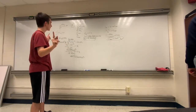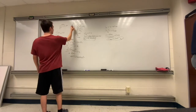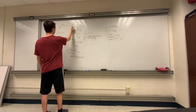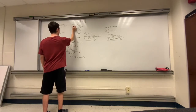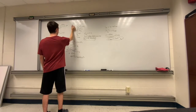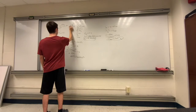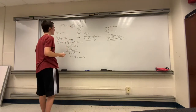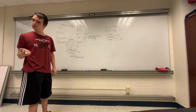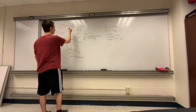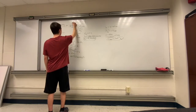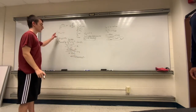Adding a free body diagram for the bullet while it is entering the wood: it experiences a force of gravity downward, and a force of kinetic friction opposing its motion. There is also a normal force present, because the bullet is touching the wood as it enters.